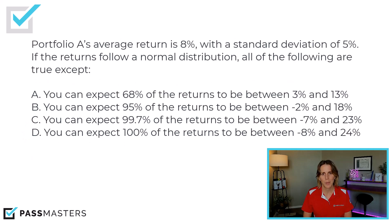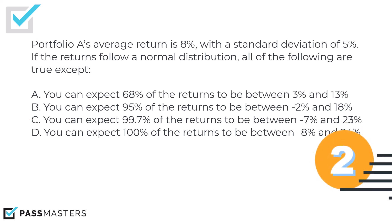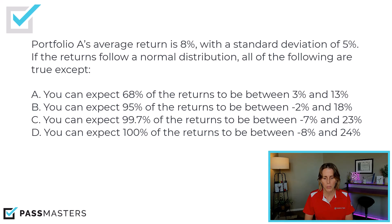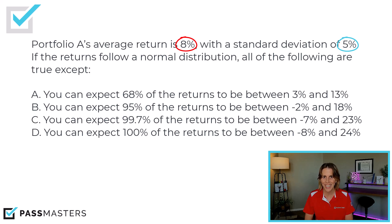Another question you might expect to see: Portfolio A's average return is 8% with a standard deviation of 5%. If the returns follow a normal distribution, all of the following are true except — so we're actually looking for the false answer. We have the average of 8 and a standard deviation of 5. Use your scratch paper. Draw a bell-shaped curve to answer a question like this. Let's look at one standard deviation, two standard deviations, and three standard deviations.